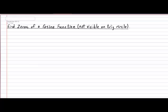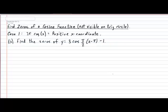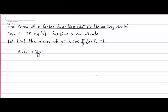Let's first begin by taking a look at case one where the cosine of the angle produces a positive x coordinate. Suppose I ask you to calculate the zeros of the function y equals 3 cosine of pi over 2 times x minus pi, subtract 1. Before we determine the zeros, let us first determine the period of this function. Don't forget, the period must be used later in your final conclusion. In a cosine function, the period is calculated with the formula 2 pi divided by the absolute value of b. In our example, that will produce 2 pi divided by the absolute value of pi over 2, which will give us a period of 4 radians. Let's set this period aside for later use in our conclusion and begin the procedure of determining zeros.